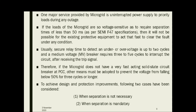One major service provided by the microgrid is uninterrupted power supply to priority loads during any outage. If the loads of the microgrid are so voltage-sensitive as to require separation times of less than 50 milliseconds, it will not be possible for existing protective equipment to act that fast to clear the fault under any condition. Usually, secure relay time to detect an under-voltage or over-voltage is after two cycles, and a medium voltage breaker requires three to five cycles to interrupt the circuit after receiving the trip signal.